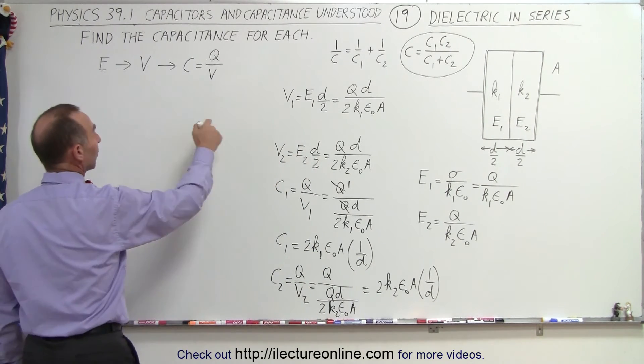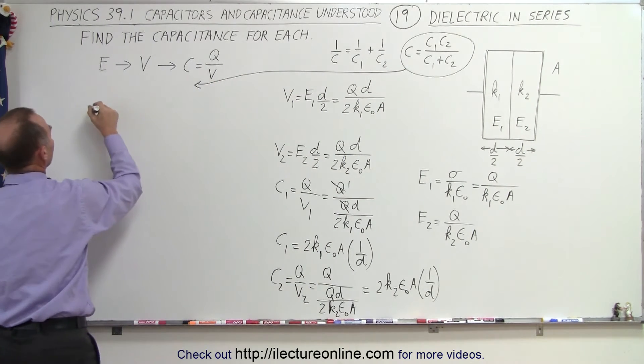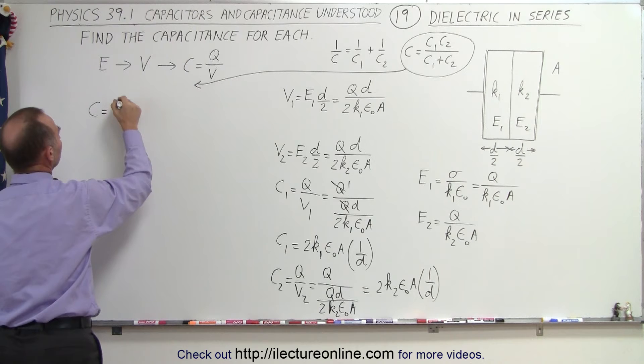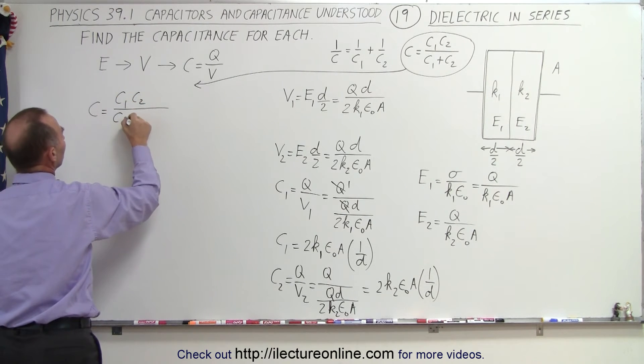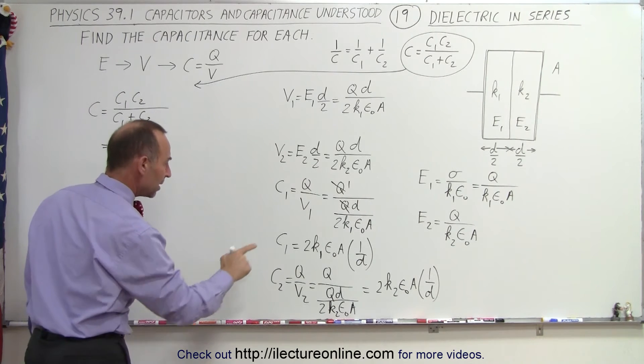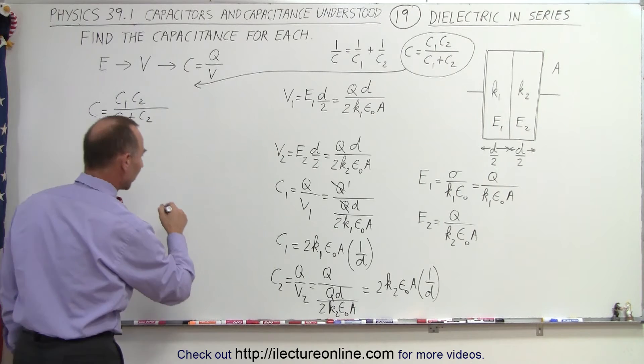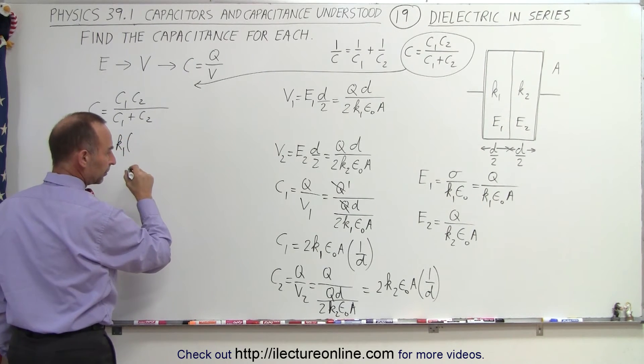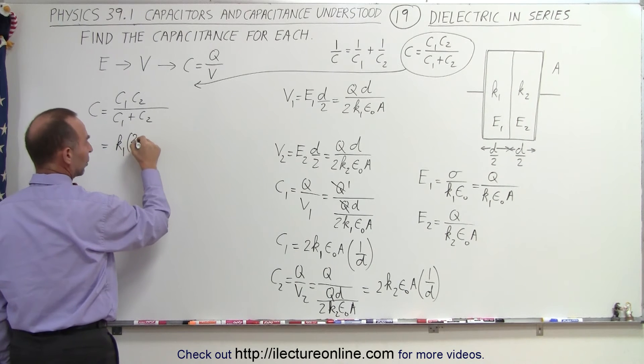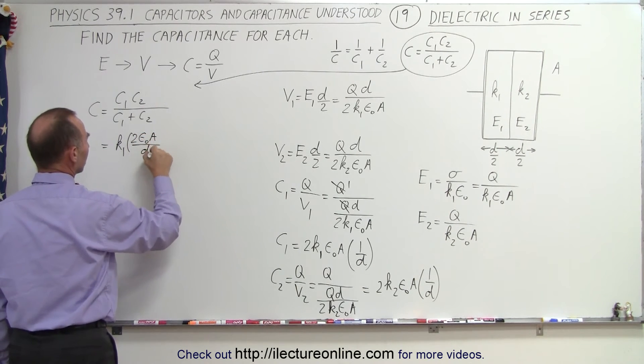So what we can do now is we can go ahead and take this equation and write that the total capacitance is equal to the product C1 C2 divided by the sum C1 plus C2. So in this case, that's going to be C1, and I think what I'm going to do is factor out a k1, so this will be k1 times 2 epsilon naught A over d.